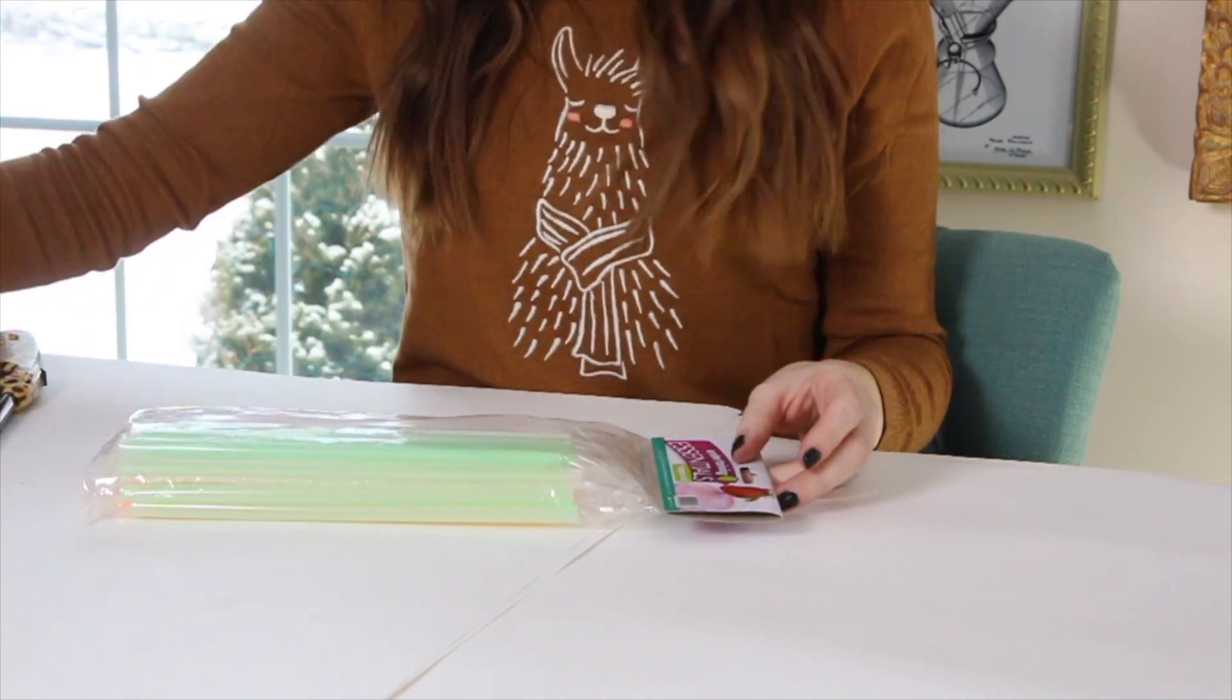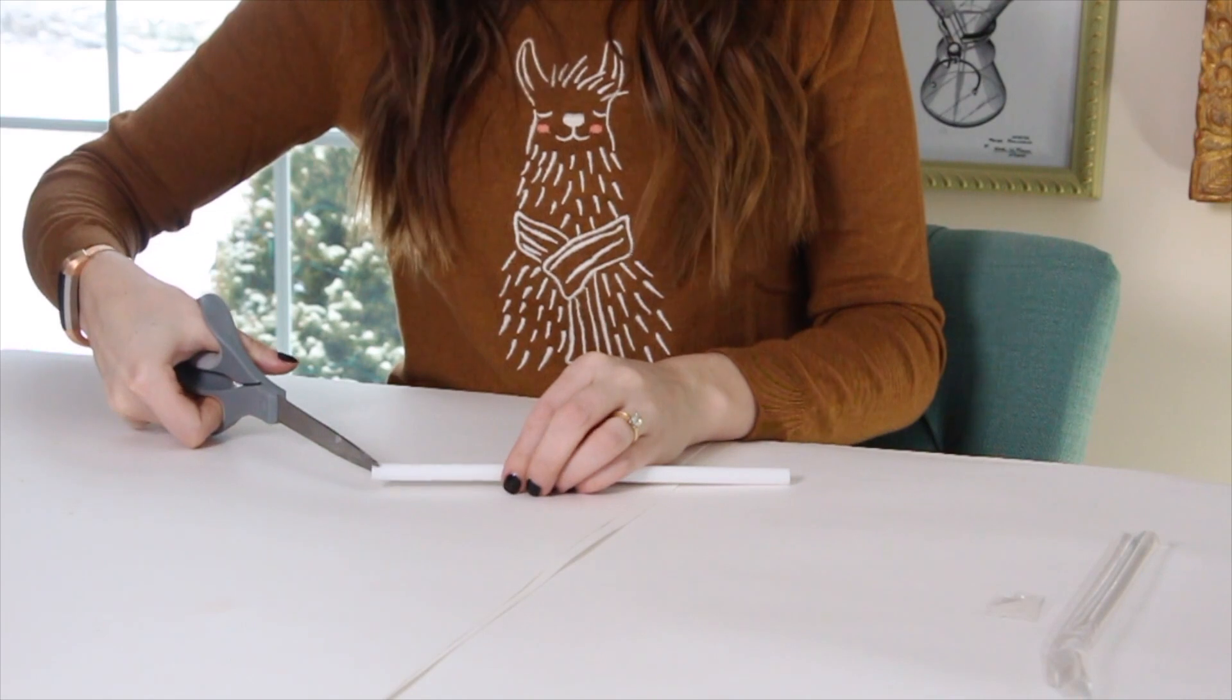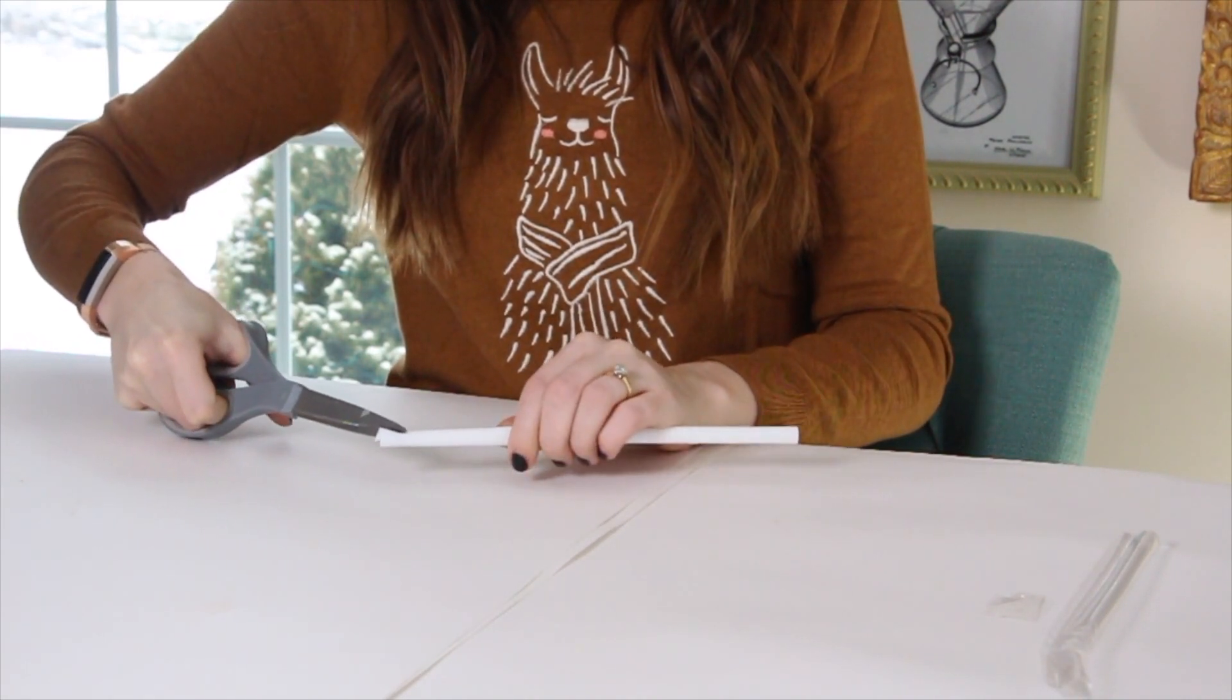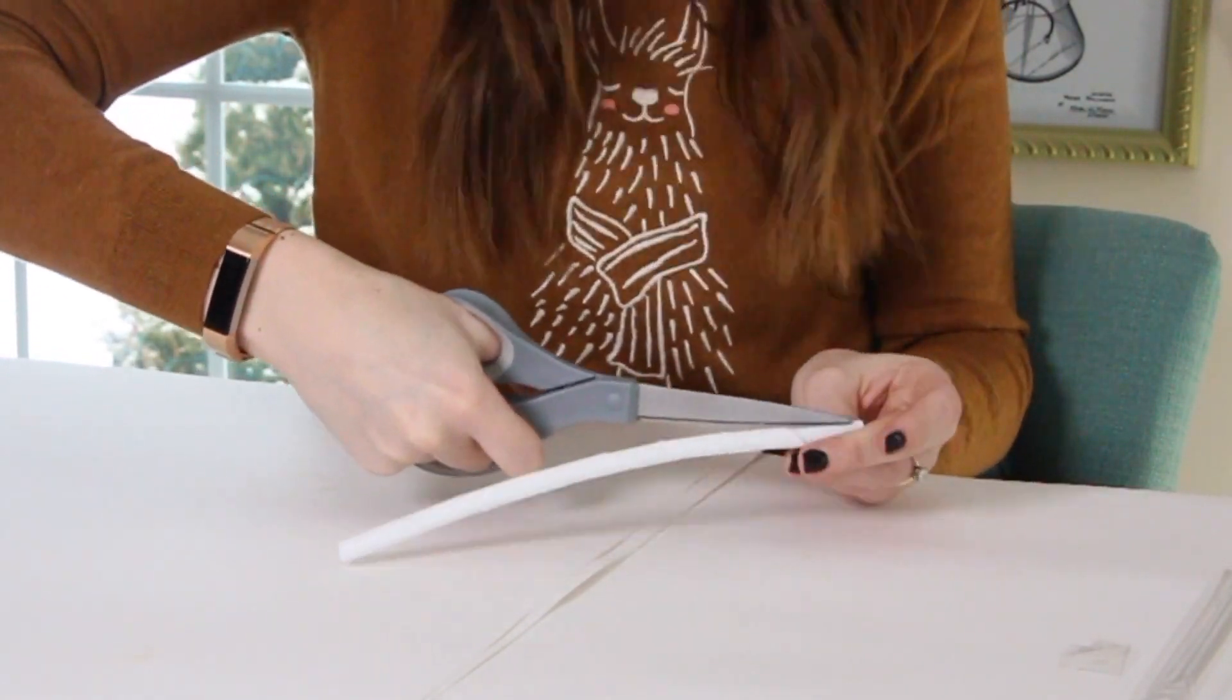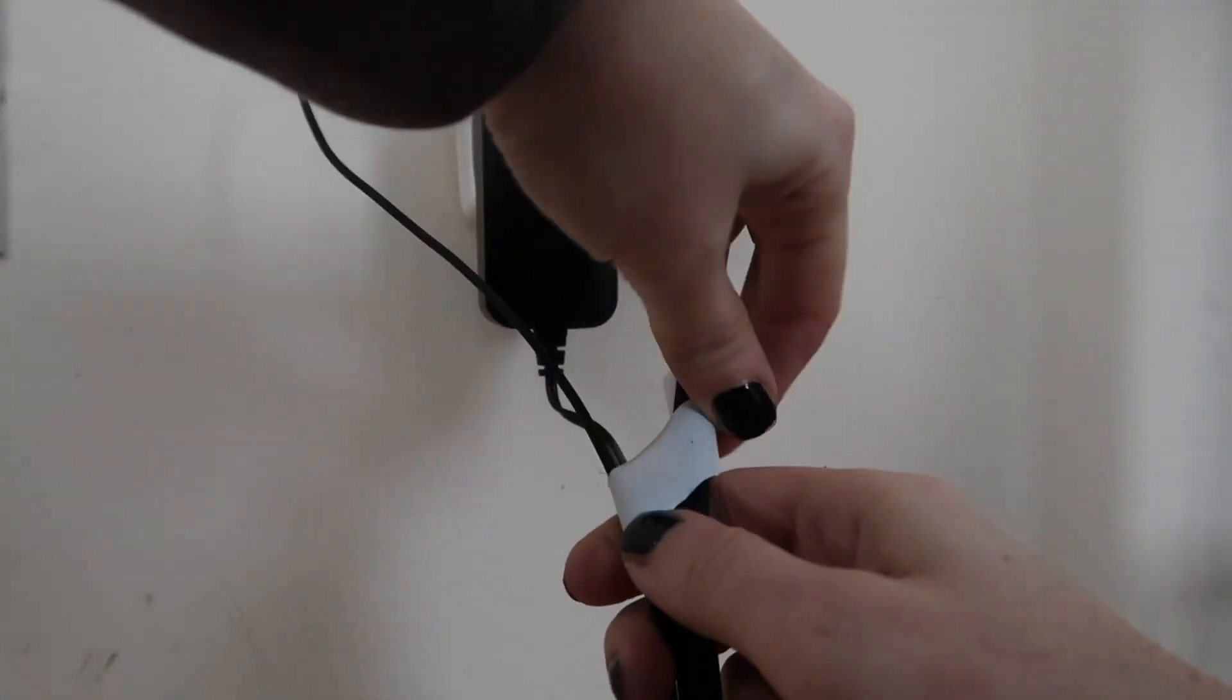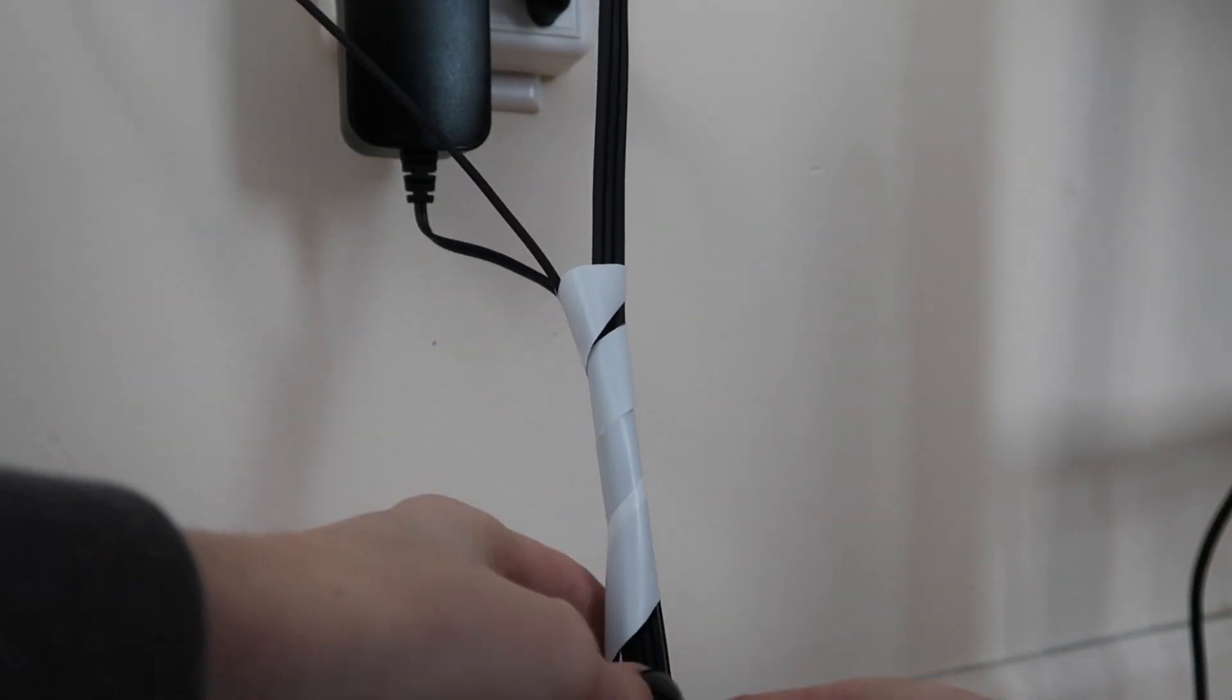I got the smoothie or milkshake straws, and you're basically just going to start at one end and cut up the length of the straw, creating a spiral shape so that when you're all done, the straw is still together, but it's been cut into a long spiral. You then can take batches of wires, and you can wrap this around the groups of wires to keep them all organized and bundled together.